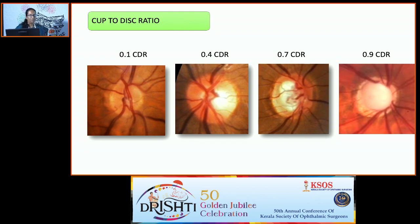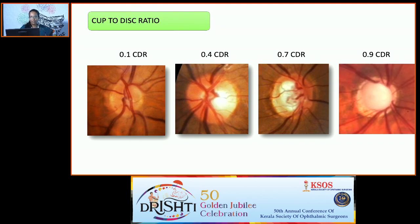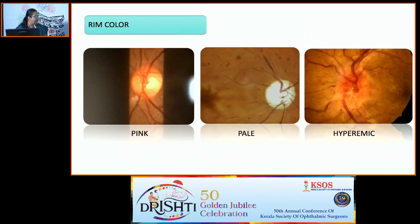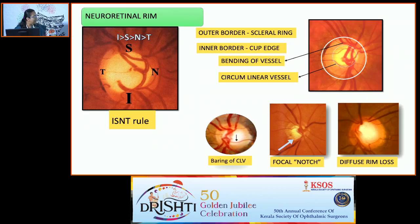Cup-disc ratio (CDR) is the comparison of vertical cup diameter to disc diameter. For a larger disc, a larger cup is normal, but 0.3 to 0.5 is considered the normal range. The neuroretinal rim should follow the ISNT rule: inferior rim is greater than superior, which is greater than nasal, and nasal greater than temporal. If this rule is broken, it is significant. Also look at the outer border of the scleral ring, the cup edge, bending of vessels indicating cup edge, and the circumlinear vessel — baring of the circumlinear vessel indicates the NRF has fallen backward.